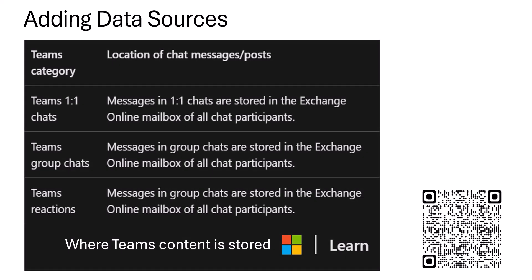Before adding data sources, it's worth paying attention to the Microsoft Learn documentation — the QR code takes you directly to that page. It outlines where Teams-related artifacts are stored. For example, Teams one-to-one chats and group chats are stored in the Exchange Online mailbox, and even reactions are stored there too. This tells us we need to add the user's mailbox as a custodial data source.